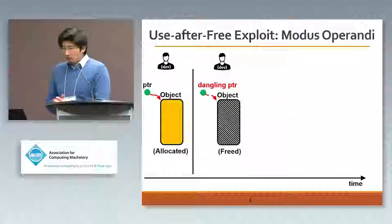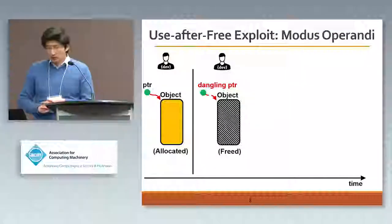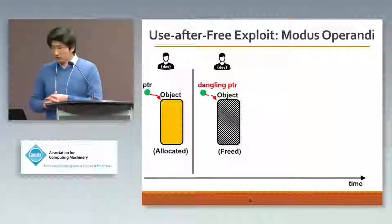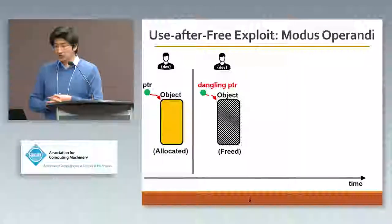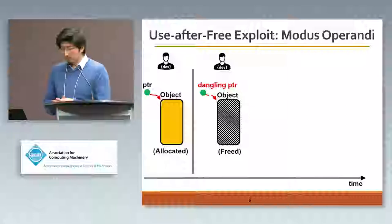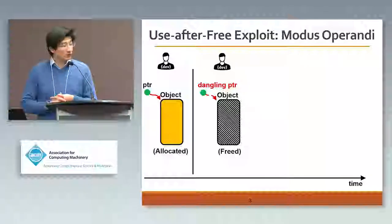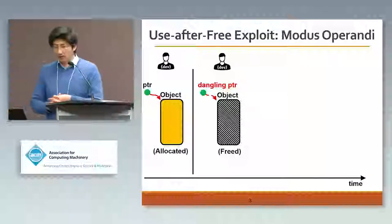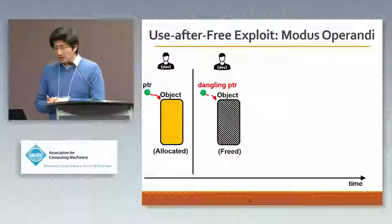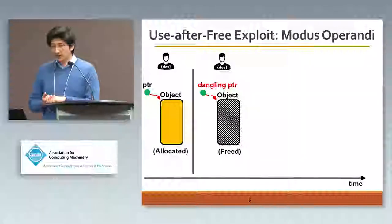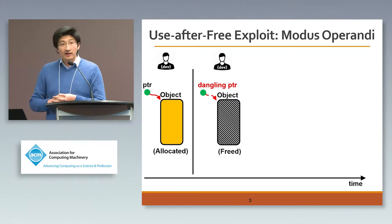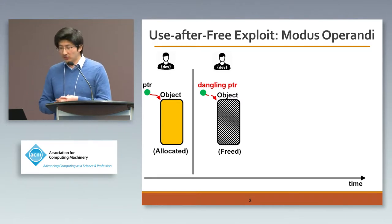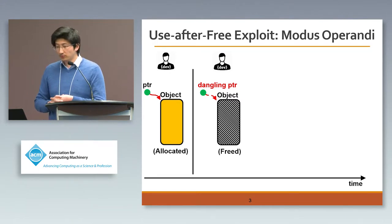How does a use-after-free exploit work? In this presentation I generally split the use-after-free exploit into four steps. The first two steps basically involve the developer, where C and C++ programmers allocate an object using malloc, which returns a pointer assigned to a variable PTR.